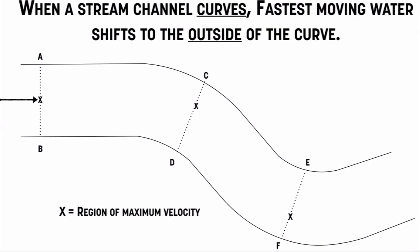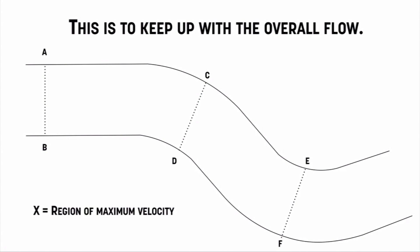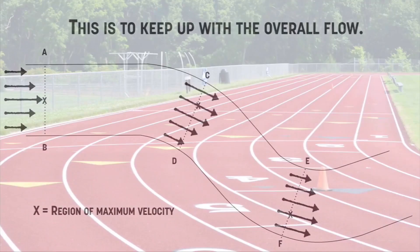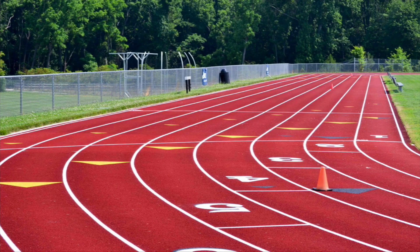The faster moving water is pushed to the outside of each curve to keep up. When the stream is straight, the water is fastest in the middle. When there's a curve, the inside of the curve moves slower and the outside moves faster. This is like runners on a track — people on the inside lane cover a shorter distance, while people on the outer lane have to cover more ground. The same mechanism applies to a stream going around a bend.